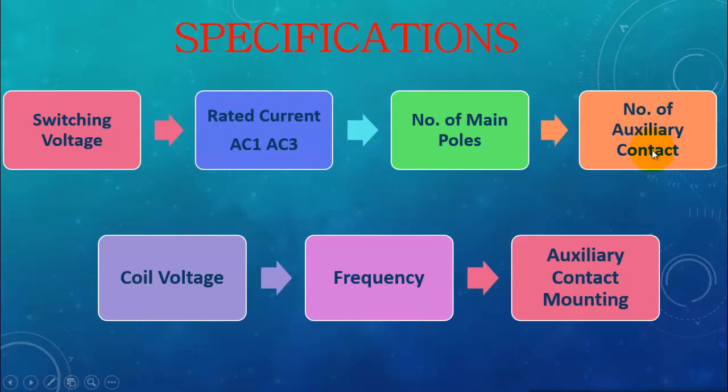Then number of auxiliary contacts. How many normally open or normally closed contacts you need with the contactor. Then you have to specify the coil voltage, either AC or DC, because the contactor coil voltages can range from 24 volts, 12 volts to several voltages. Then the frequency, either 50 Hertz or 60 Hertz. And finally the auxiliary contact mounting, it can be side mounted or top mounted.